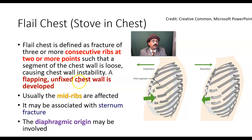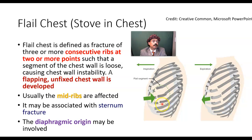A flapping, unfixed chest wall segment is developed. Usually mid-ribs are affected; the upper ribs are protected by thick muscles and are deeply situated, and similarly the lower ribs. It may also be associated with fracture of the sternum, and with injury to the muscular origin of the diaphragm, since the diaphragm takes origin from multiple points including the xiphoid process and the lower sixth rib, interdigitating with the transversus abdominis muscle.